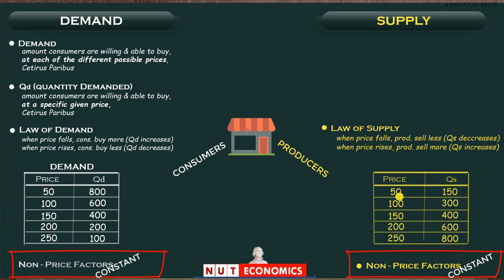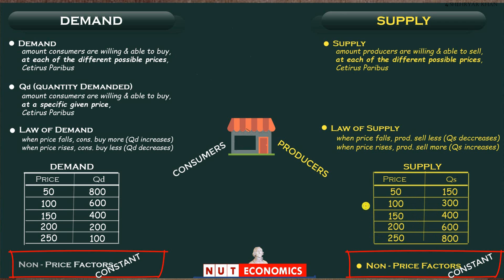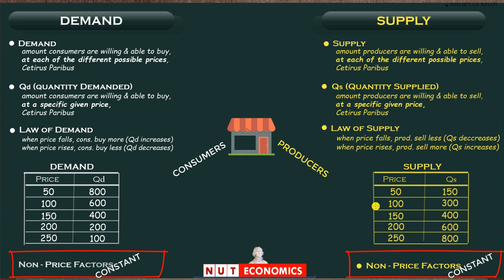Keeping the same terminology in mind: supply is the entire relationship between all the different possible prices and the amount producers may wish to supply at each of those prices — this entire relationship taken together is the supply of ice creams, assuming all non-price factors are constant. Quantity supplied, at a specific price given a supply — for example, at a price of 50 the quantity supplied is 400, and at a price of 100 it is 300. All of these quantity supplied values, the junior partners, together constitute this one whole single supply. Once we have this demand and supply, we can bring them together and understand how this model explains the working of the free market.